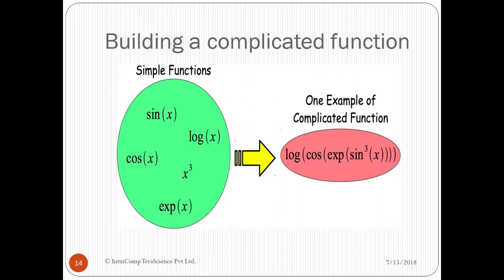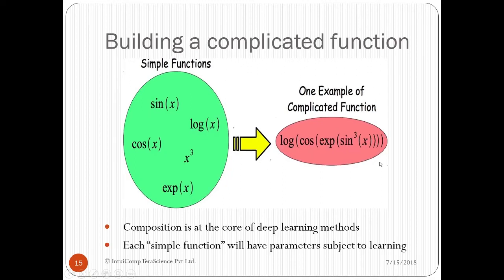Building a complicated function: on the left-hand side, we have a set of very simple functions which most of you must be familiar with, like sin x, cos x, log x, x cube, e raise to x, etc. We can use these simple functions to make a complicated function, like log of cos of e raise to sin cube x. Composition is at the core of deep learning methods. Each simple function will have parameters subject to learning.